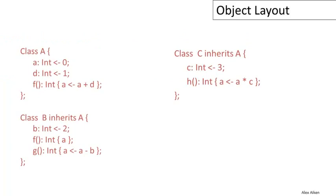To be concrete, we're going to use a little example throughout this video. We have three classes: A, B, and C. Notice that A is a base class and B and C both inherit from A. All three classes define some attributes — some fields — and also some methods.